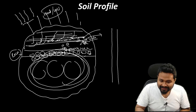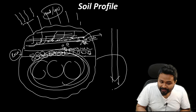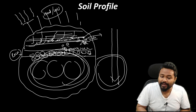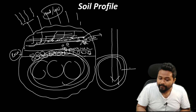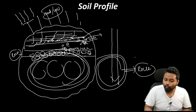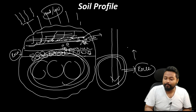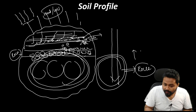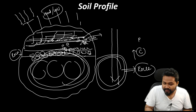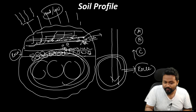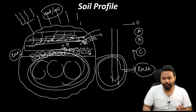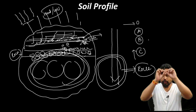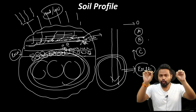What do we have to do with our parent material? This is a rock — parent material. In the upper part: C zone, B zone, A zone, and the upper zone is O.